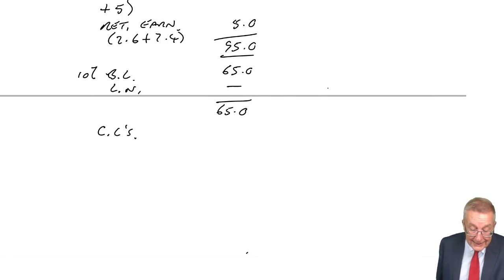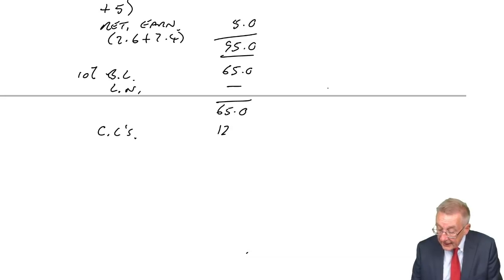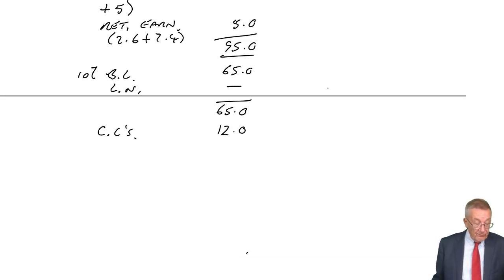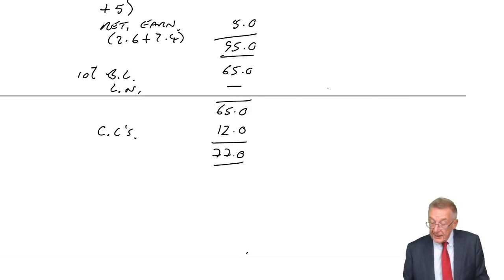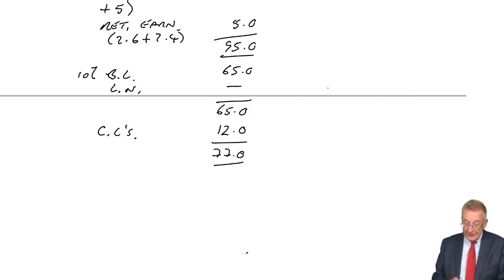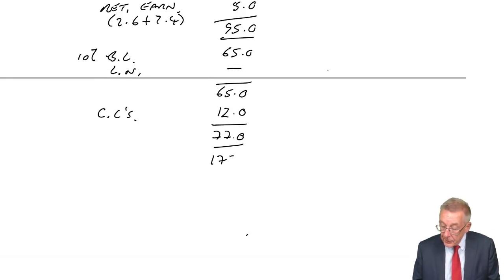The current liabilities. Where was it? Note 5 of the refinancing. Current liabilities will increase to 12 million. So the total liabilities, 77. And therefore, the total equity and liability is 95 plus 77, which is 172.